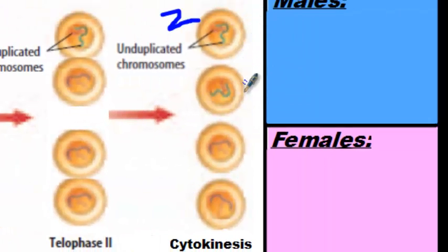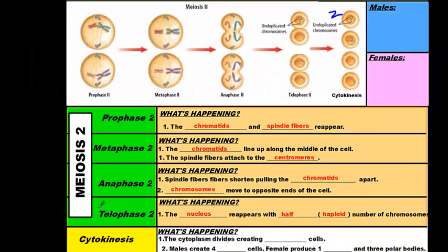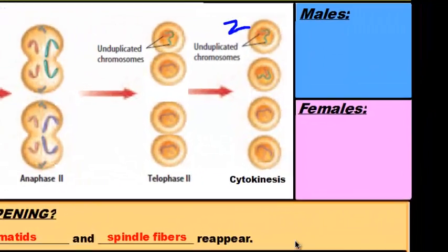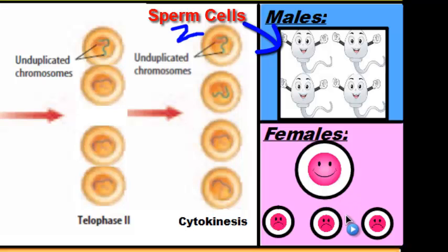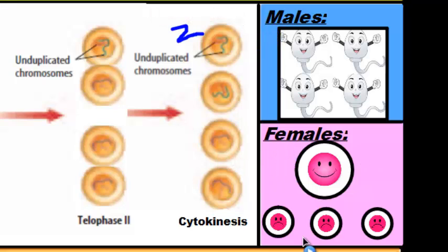Now we have our four haploid cells, and these cells are going to have different fates based on whether you are male or female. Once meiosis is over, cytokinesis begins and the cytoplasm divides, creating four cells. If you are male, those four cells become sperm cells. However, in females it's a little different — you produce four cells, but only one of those cells will become the egg, usually the bigger one because it has all the organelles and materials it needs. The other three cells are discarded by the body.